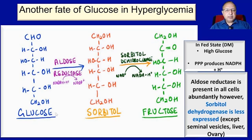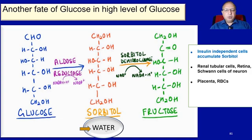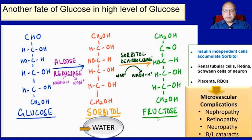Aldose reductase converts glucose to sorbitol, which can be further metabolized to fructose by sorbitol dehydrogenase. Unfortunately, while cells have large amounts of aldose reductase, sorbitol dehydrogenase is less expressed except in seminal vesicles, liver, and ovary. In insulin-independent cells — renal tubular cells, retina, and Schwann cells of neurons — sorbitol accumulates, attracting water and causing cell swelling. This leads to microvascular complications: nephropathy, retinopathy, neuropathy, and cataract acceleration.